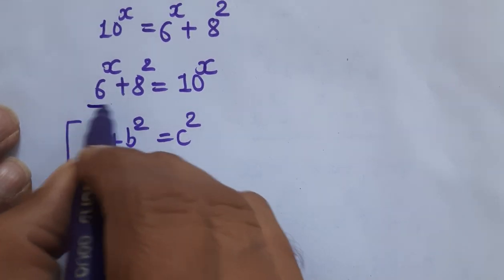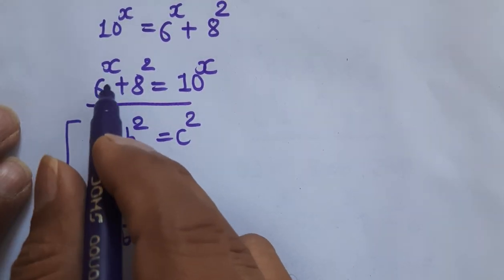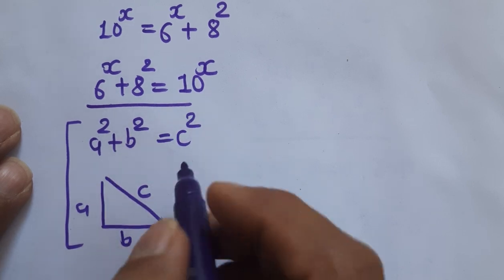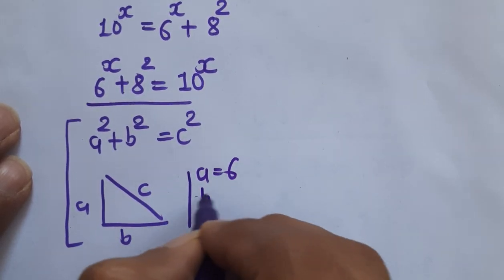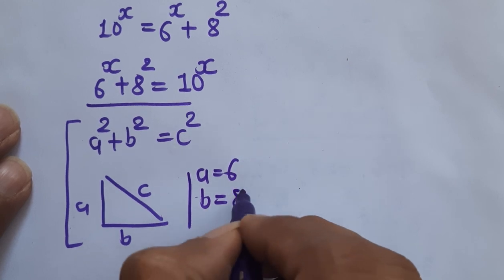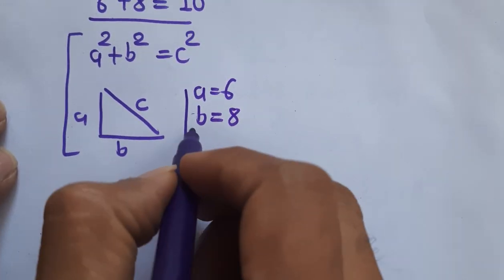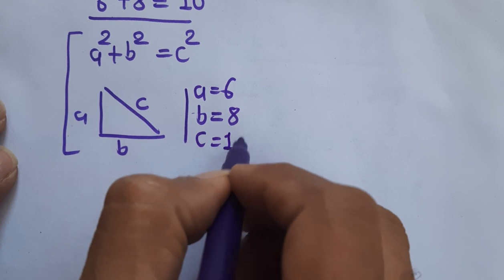So in our case, if we will apply this rule on this 6 power x plus 8 power 2 is equal to 10 power x. So in our case, a is equal to 6, b is equal to 8 and c is equal to 10.